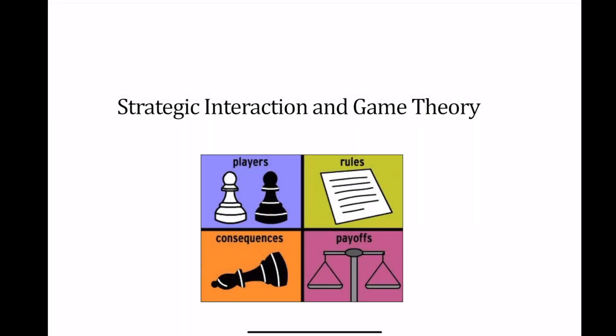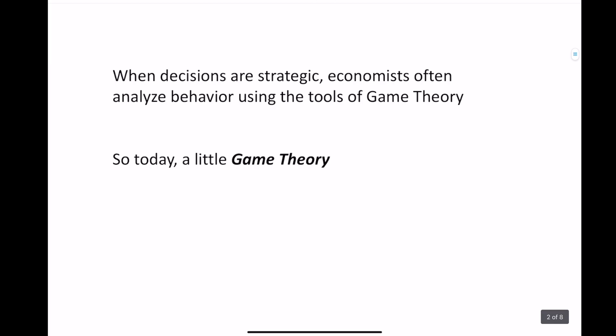In a previous video, we introduced the concepts of game theory through the example of the prisoner's dilemma. In this video, we're going to apply these tools and concepts more generally into different games. The usefulness of game theory for environmental and natural resource problems is that when decisions are strategic — what I do depends on what others do — which is often the case with environmental problems and externalities, economists analyze behavior using game theory concepts.